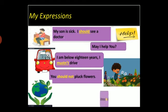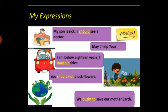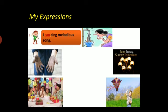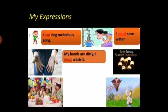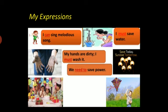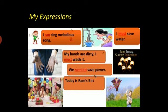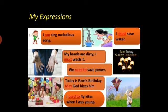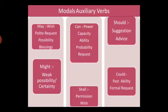'We ought to save our mother earth' — it means it is our moral duty to save our earth. 'I can sing melodious songs' — the sense of ability. 'I must save water' — it means it's necessary to save water. 'My hands are dirty, I must wash them' — it's compulsory. 'We need to save power' — the sentence denotes necessity. 'May God bless him' — the sentence denotes blessing. 'I used to fly kites when I was young' — the sentence denotes a past habit.